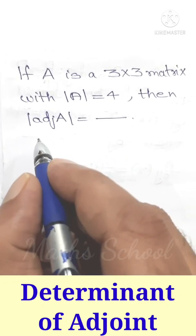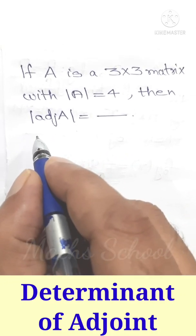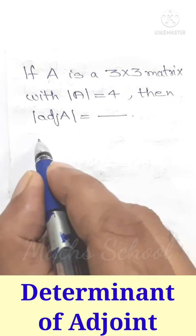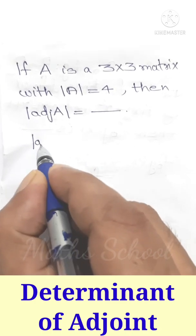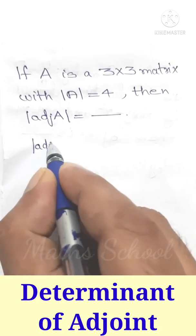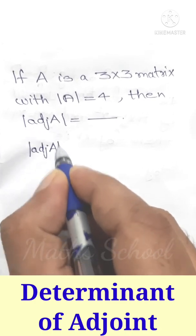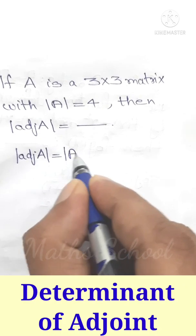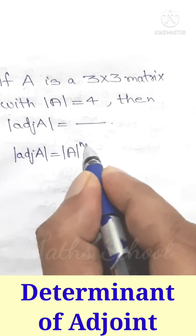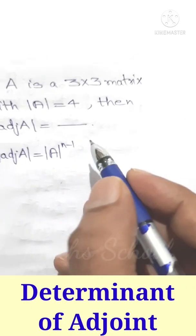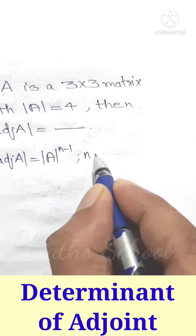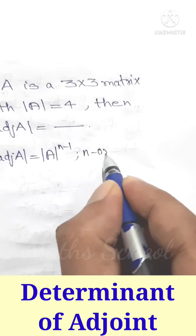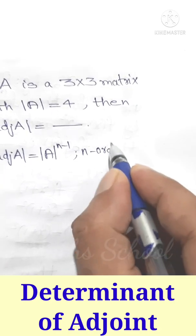If A is an n by n matrix, then determinant of adjoint A equals determinant A raised to n minus 1, where n is the order of the matrix A.